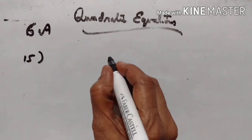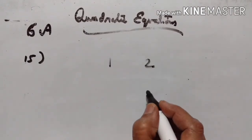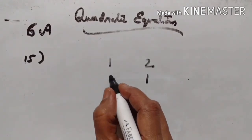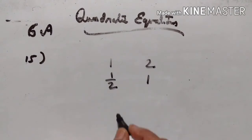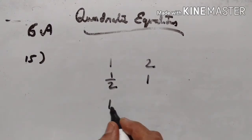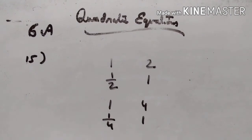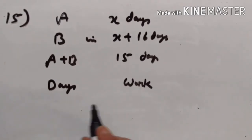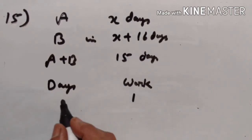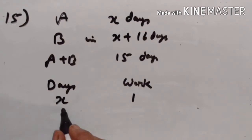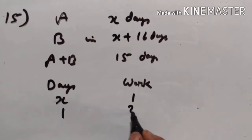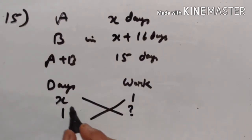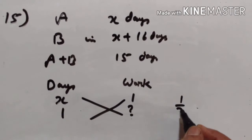If you can complete one work in two days, then in one day you can complete half the work. If you complete one work in four days, then in one day you can complete one-fourth of the work. So one work in x days means in one day you complete one upon x work.